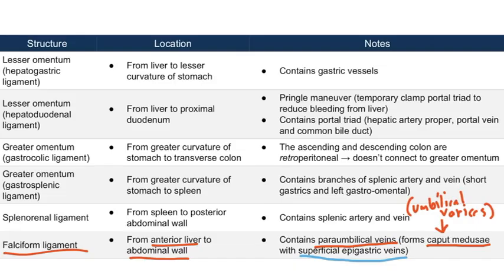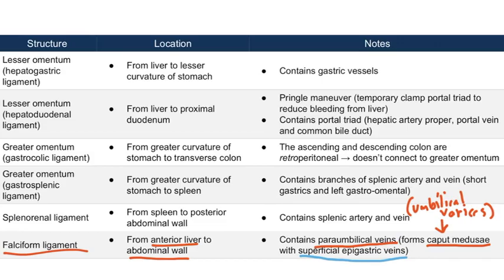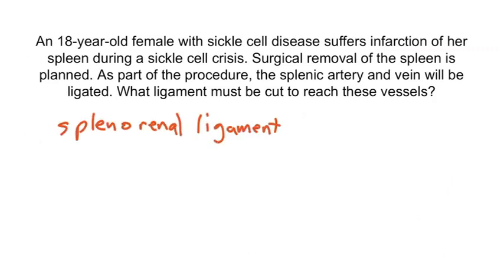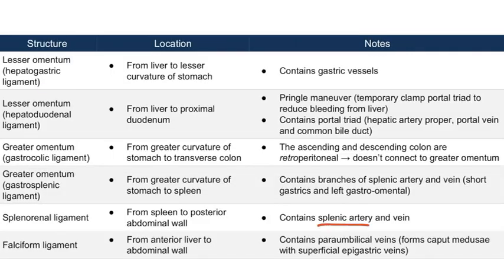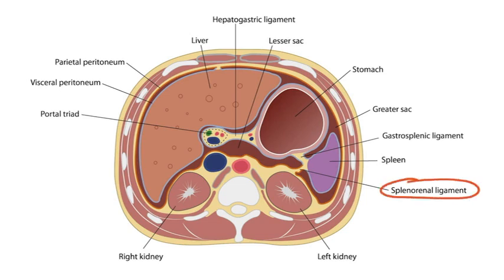Now let's do a question. An 18-year-old female with sickle cell disease suffers infarction of her spleen during a sickle cell crisis. Surgical removal of the spleen is planned. As part of the procedure, the splenic artery and vein will be ligated. What ligament must be cut to reach these vessels? The answer is the splenorenal ligament. Recall from the table that the splenic artery and splenic vein are contained within the splenorenal ligament, whereas their branches are within the gastrosplenic ligament, which is more anterior.